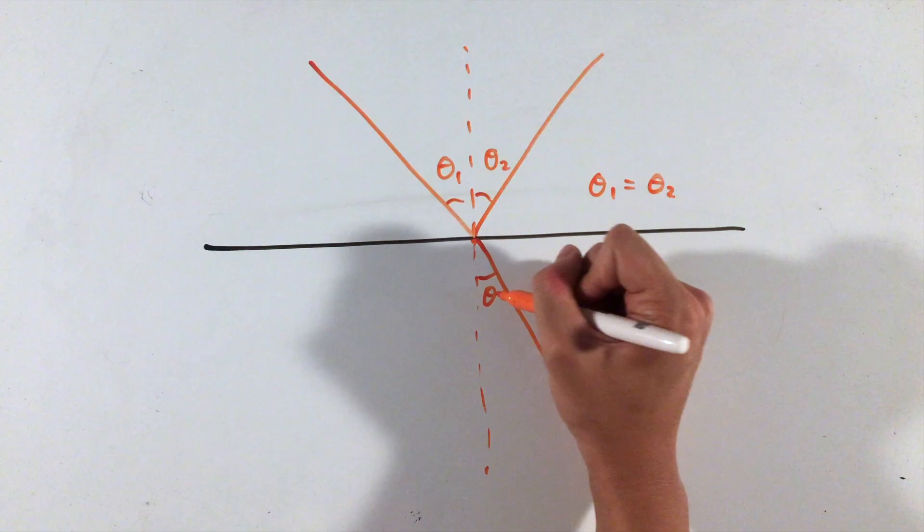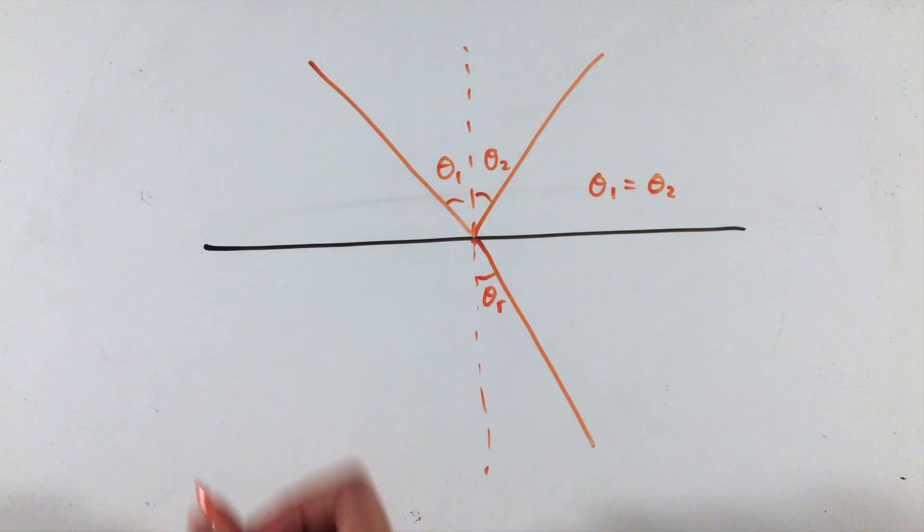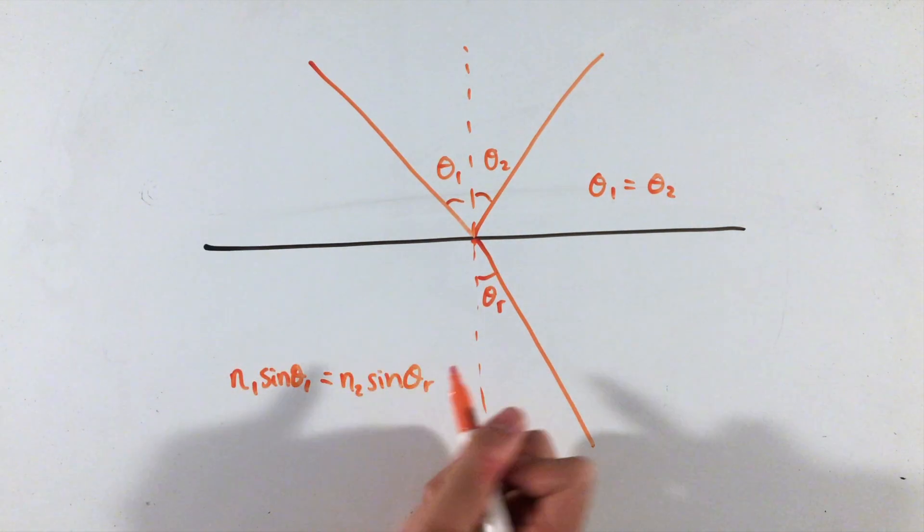The second part is known as refraction, where light is bent as it travels from one medium to the other. The angle of this refracted light beam is given by Snell's Law shown here, where each n is a property of the material called its index of refraction.